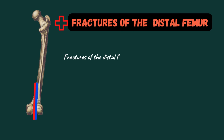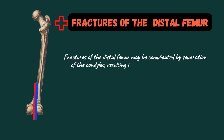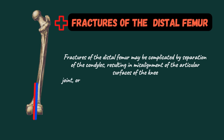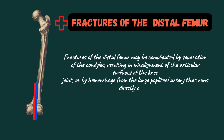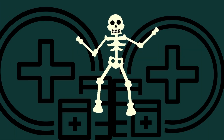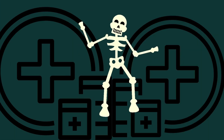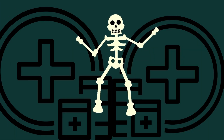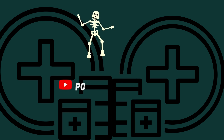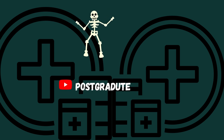Fractures of the distal femur may be complicated by separation of the condyles, resulting in misalignment of the articular surfaces of the knee joint, or by hemorrhage from the large popliteal artery that runs directly on the posterior surface of the bone. That's all — hope you find this video useful.